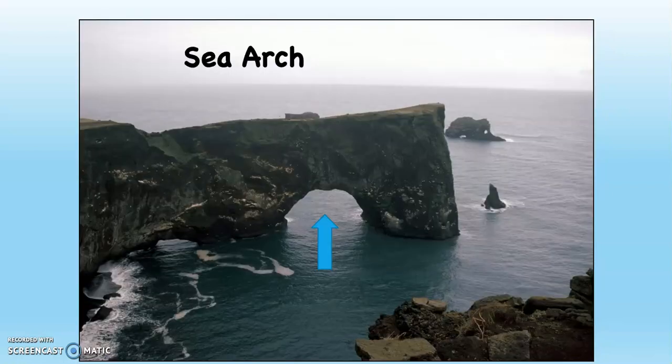This is a sea arch. You can see that the waves have cut all the way through this protruding headland, this little peninsula. This is common where you have wave refraction, because the waves can come in from both sides and chew away at that protruding headland and undermine it.